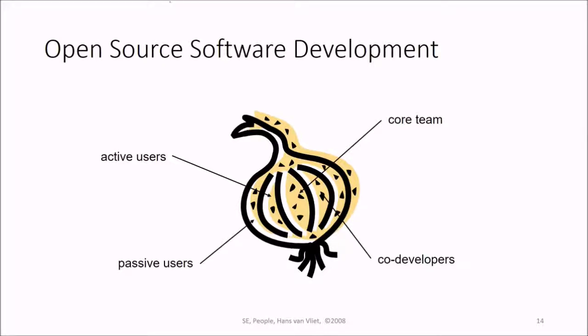What about open source software development? In open source development, there are active users, a core team, passive users, and core developers. There's always a core team in open source development. Then we have active users which are closely related to the core team, core developers along with the active users, and finally passive users who are contributing.